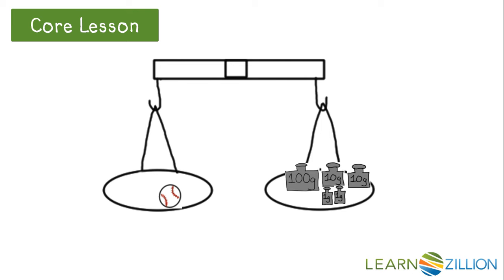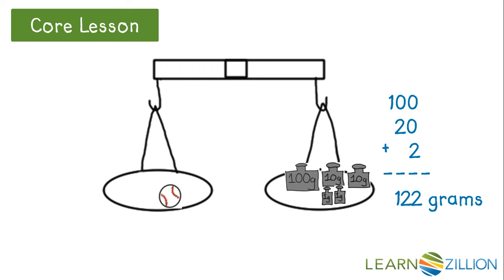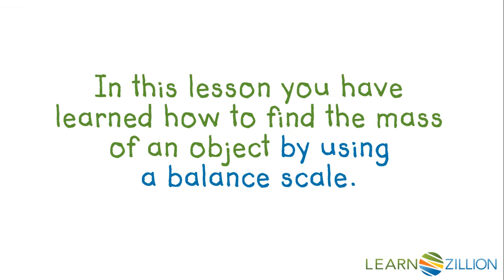Now we have to add the weight of all these masses. We have a hundred, and two tens which is twenty, and two ones which is two. So a hundred plus twenty plus two, we get a hundred and twenty-two grams. In this lesson, you have learned how to find the mass of an object by using a balance scale.